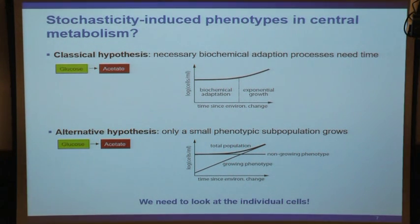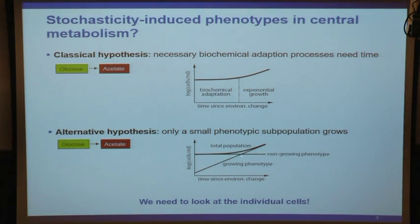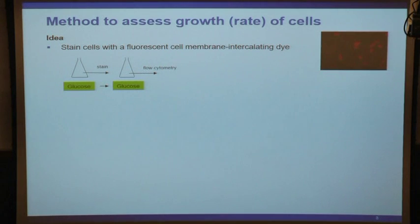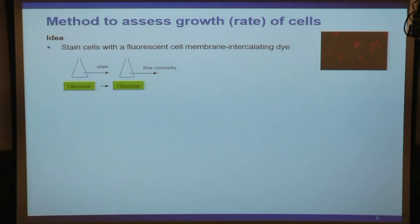The assay we came up with went the following way. We took a fluorescent dye with properties such that it would intercalate into the membrane of a cell. If we have an E. coli cell and put a number of these dye molecules into it, and the cell grows in length and then divides, there would be no additional dye molecules coming in.